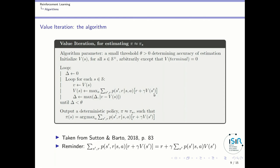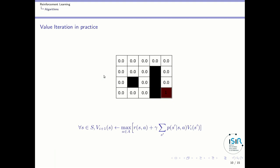Now let's have a closer look at the algorithms themselves. I have taken the presentation from the Sutton and Barto book. Value iteration is very simple — you just have one loop where you compute the value of a current state, then you maximize, applying the Bellman operator with the max, and you do so until the difference between the previous values and the new values is less than some threshold. If it's below the threshold, you can stop — you have reached the optimal value function. You will implement this in labs if you are one of my students.